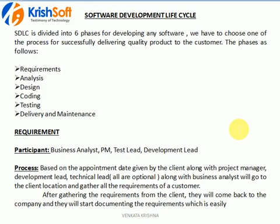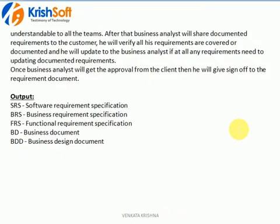The output of the requirements phase is a requirement document — it could be called a Business Requirement Document, SRS (Software Requirement Specification), Functional Requirement Document, or Business Design Document. Different companies may use different names, but all of these documents contain the requirements.